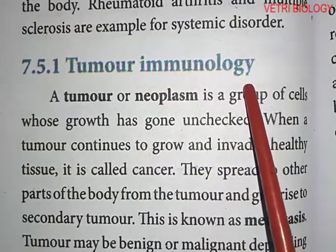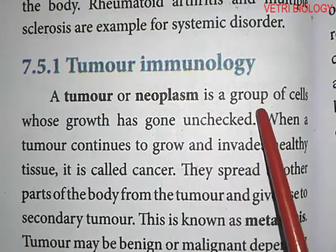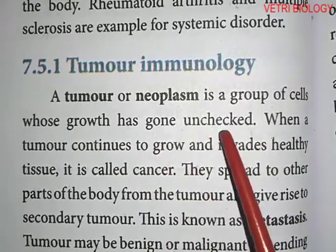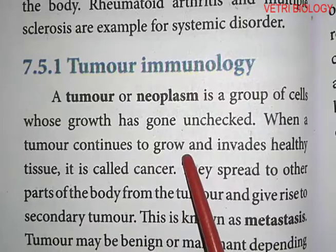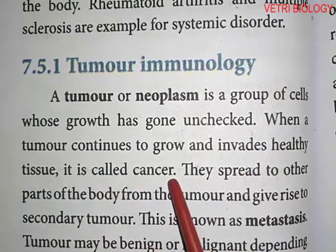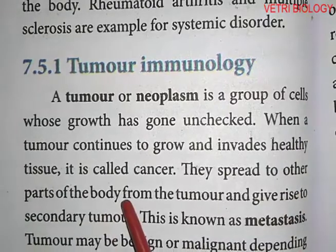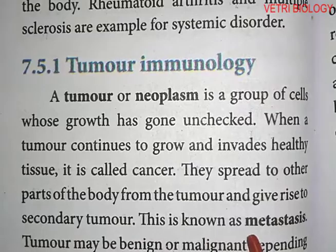A tumor or neoplasm is a group of cells whose growth has gone unchecked. When a tumor continues to grow and invades healthy tissue, it is called cancer. Cancer cells spread to other parts of the body from the tumor and give rise to secondary tumors. This is known as metastasis.